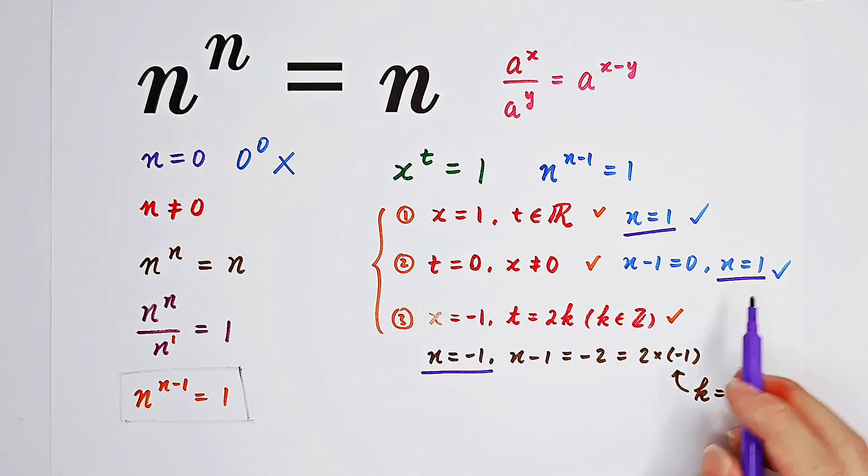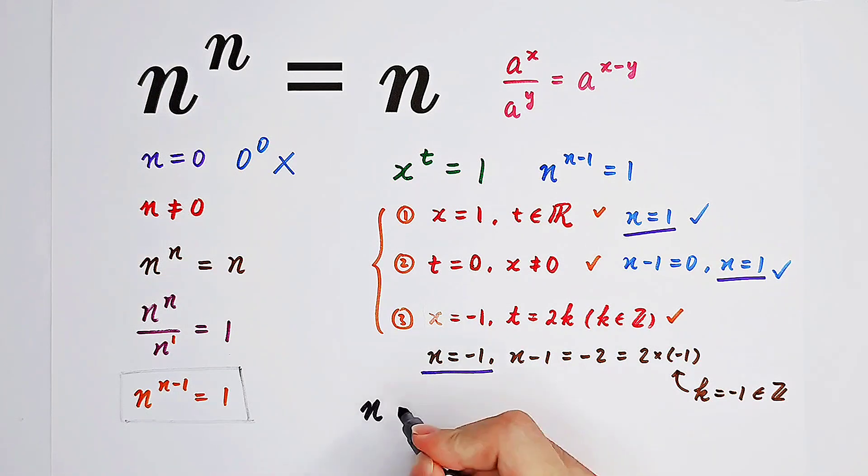n is 1 or n is negative 1. So we can conclude that the solution is n equals 1 or n equals negative 1. Did you get it? Give me a thumbs up. Subscribe to me for more wonderful questions, and we'll see you next time. Bye bye!